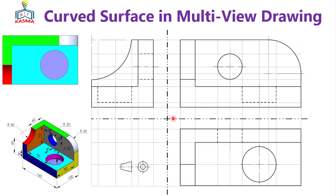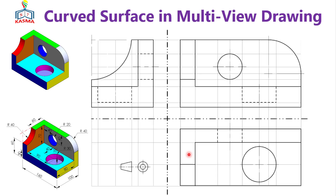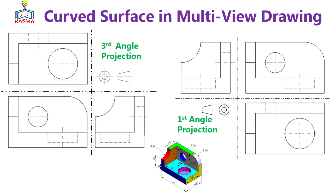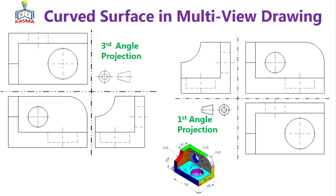This is the multi-view drawings of the curved surface using different techniques — the basic steps are shown here. You can simply construct based on what I showed you. Now let's look into the third angle projection system. The first and third angle systems have the same views — front, top, and right side — except their positions differ. In third angle projection, the front view is here, the top view is on top of the front view, and the right side view is on the right. In first angle projection, the top view is below the front view and the right side view is on the left. This is their basic difference, but their layouts are the same.